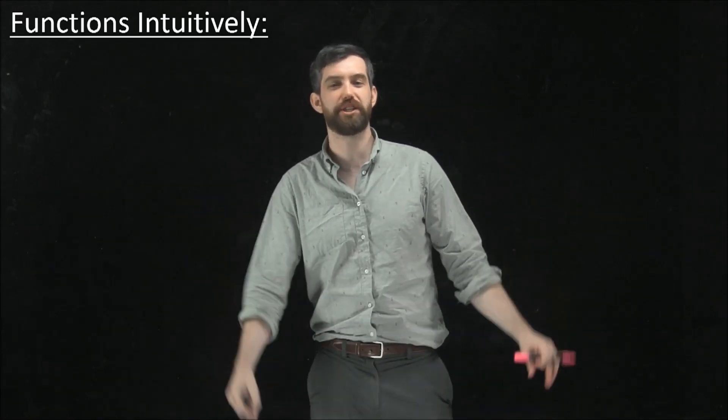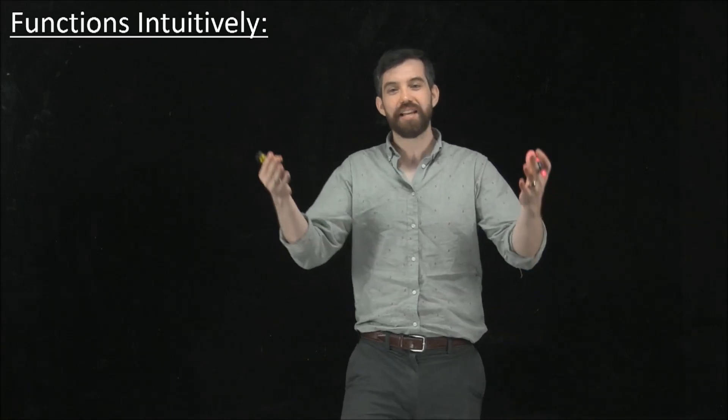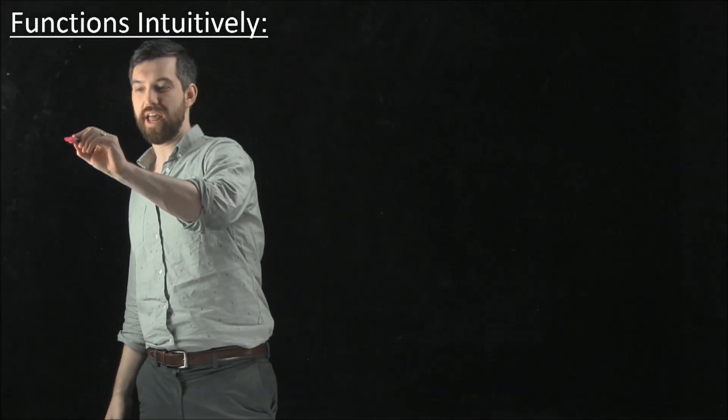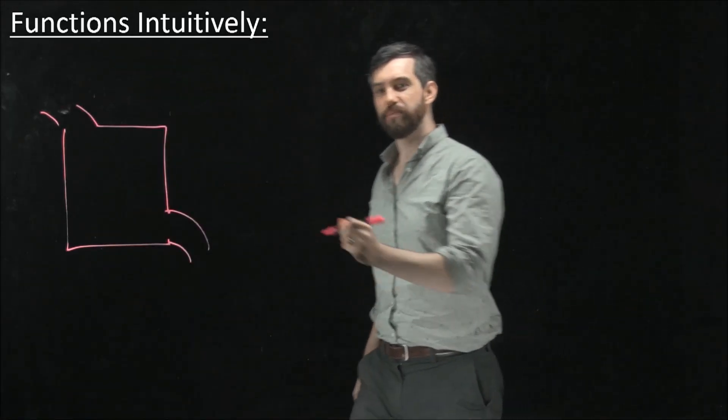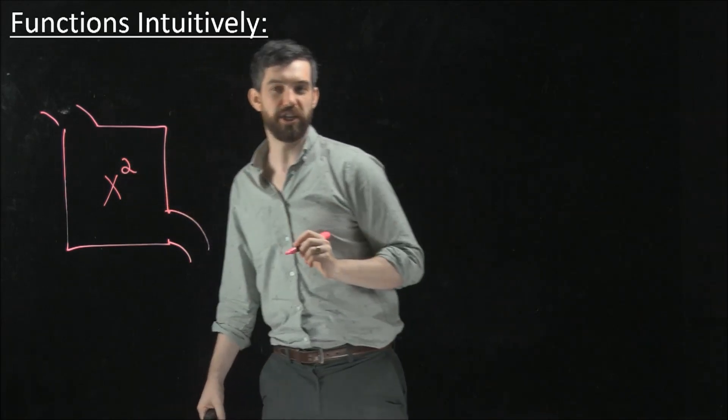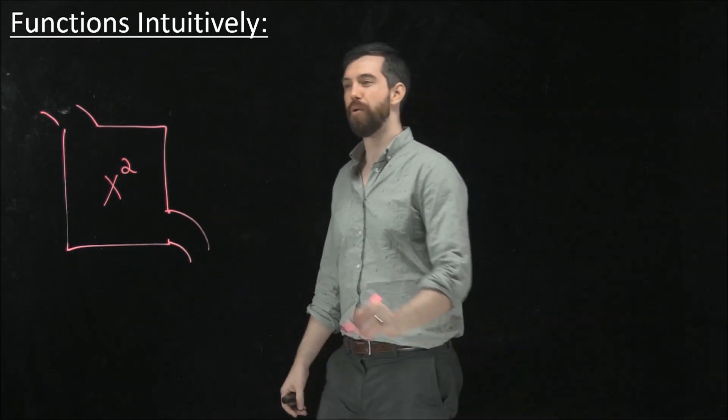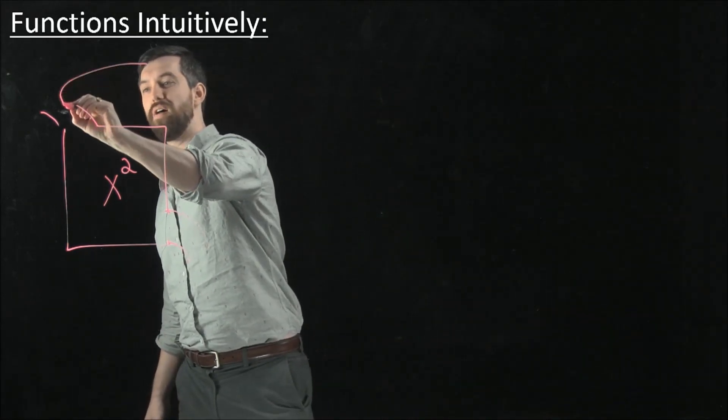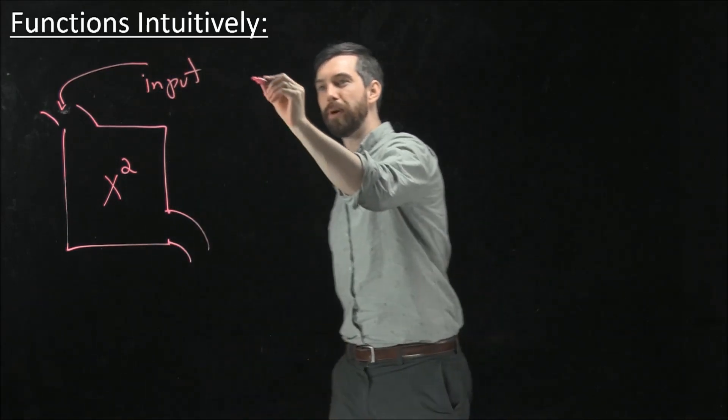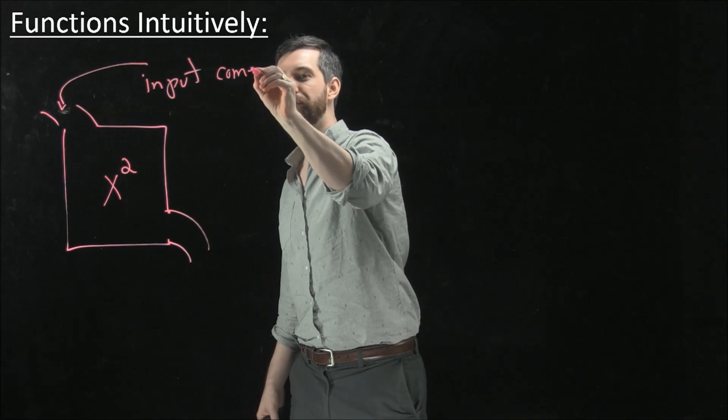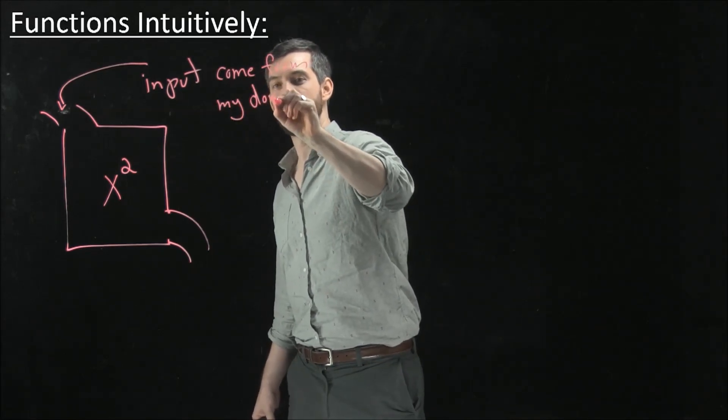Another intuitive picture for how we can think of a function is literally as a machine. In other words, I'm going to imagine that I've got some sort of machine here. And I'm going to call this machine the x squared machine. This is the squaring machine that takes a number and squares it. And there's two different components here. First of all, I'm going to have an input. And I want to think about it that my input is going to come from my, here's my fancy math word, my domain.